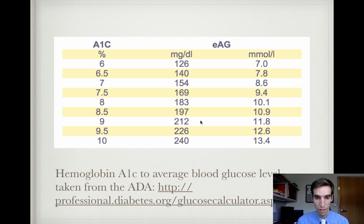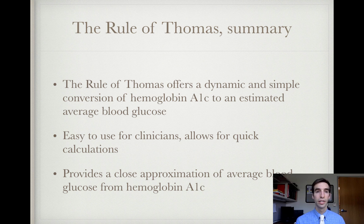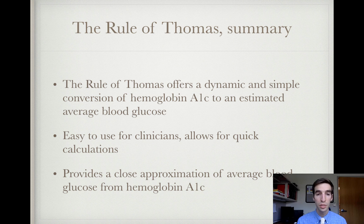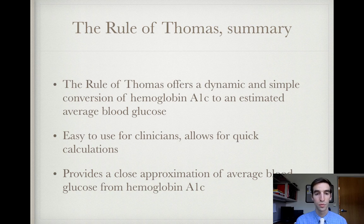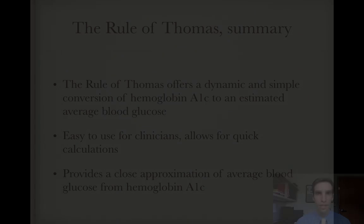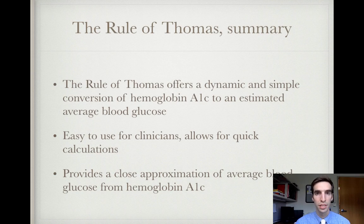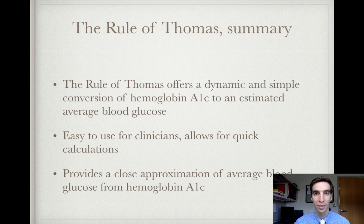We're only two points off. In summary, the Rule of Thomas offers a dynamic and simple conversion of hemoglobin A1c to an estimated average blood glucose. It's easy to use for clinicians and allows for quick calculations in the clinic and in the hospital, providing a close approximation of average blood glucose from hemoglobin A1c. I hope you use the Rule of Thomas in managing your patients with type 1 and type 2 diabetes, and I hope it helps you optimize their care. Thank you.